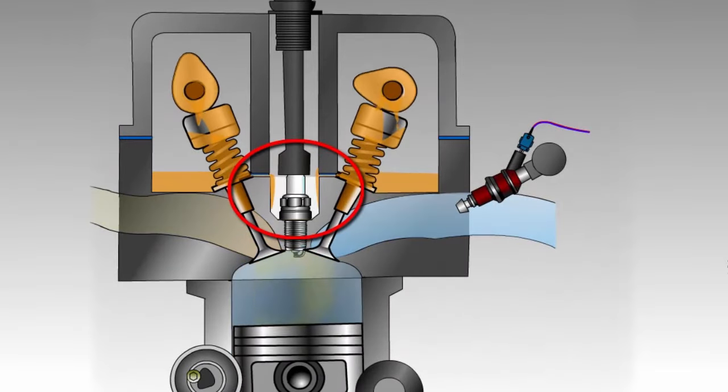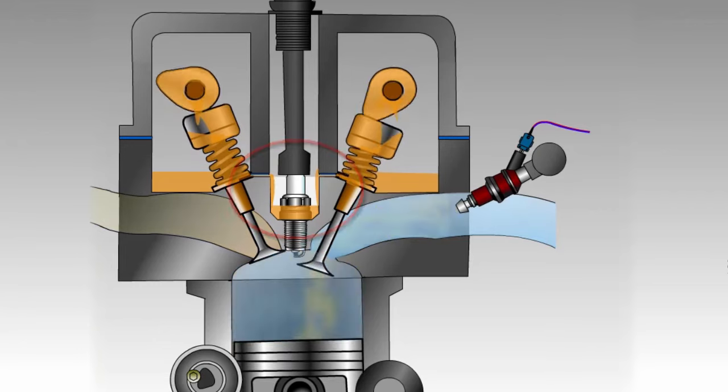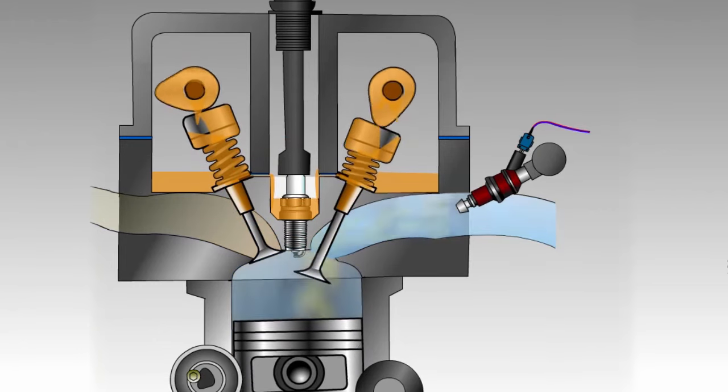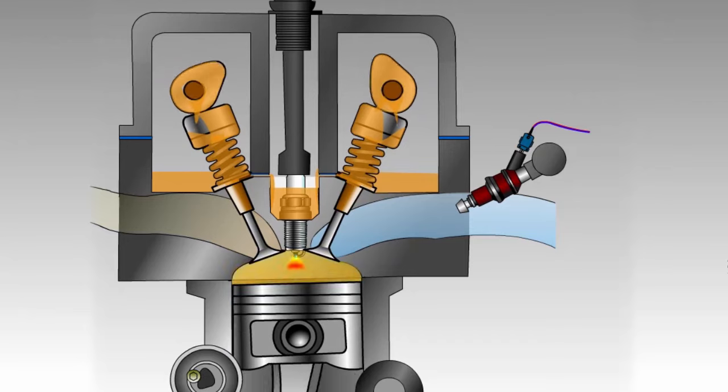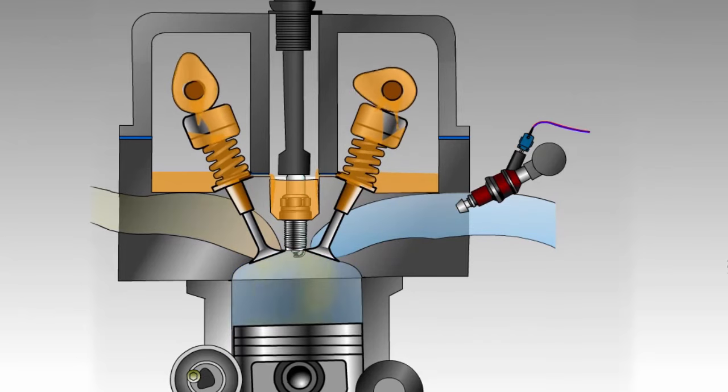If oil is leaking into the spark plug tubes on an overhead cam engine, it usually indicates that the spark plug tube seal is leaking. Generally, this is replaced along with the valve cover gasket as they are both placed between the cylinder head and valve cover.